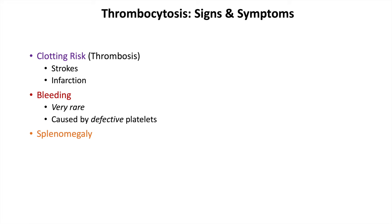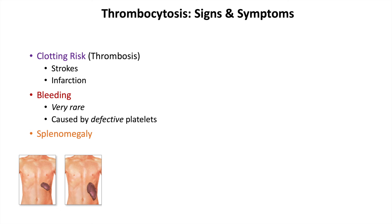Splenomegaly and early satiety can also be signs and symptoms of thrombocytosis. Because the spleen sequesters and breaks down platelets, when there are so many platelets, the spleen essentially has to get bigger and bigger to deal with them all.